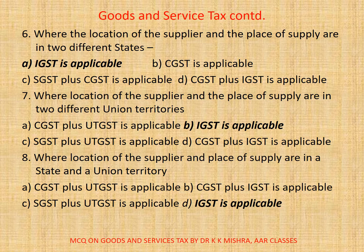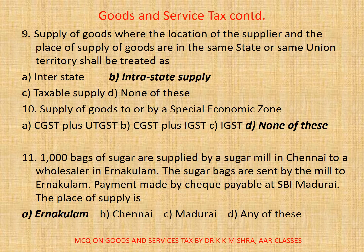Question 8: Supply of goods where location of the supplier and the place of supply are in a state and a union territory — A. CGST plus UTGST is applicable, B. CGST plus IGST is applicable, C. SGST plus UTGST is applicable, D. IGST is applicable. Here correct option is D: IGST is applicable.